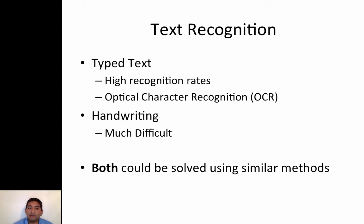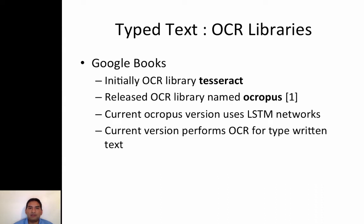There are different types of text, and typed text is much easier to be recognized than handwriting. Handwriting is much more difficult, but we may be able to solve both using similar methods. For typed text we can use OCR libraries — OCR stands for optical character recognition — and some of the most popular ones are Tesseract and OCR Opus.